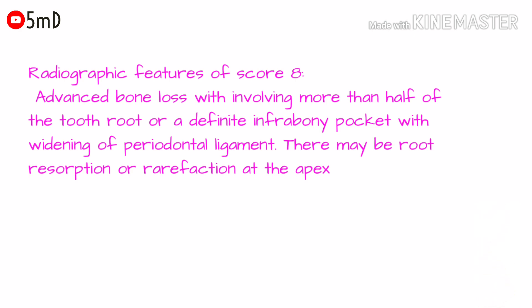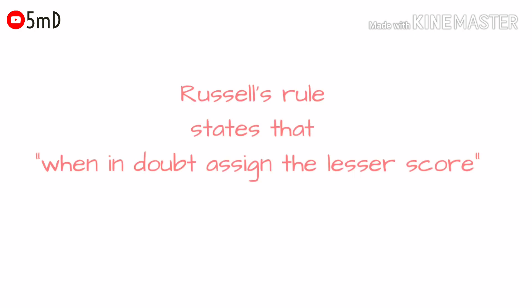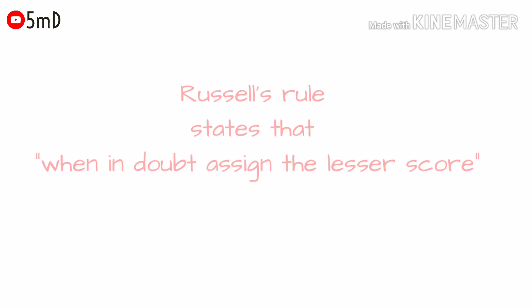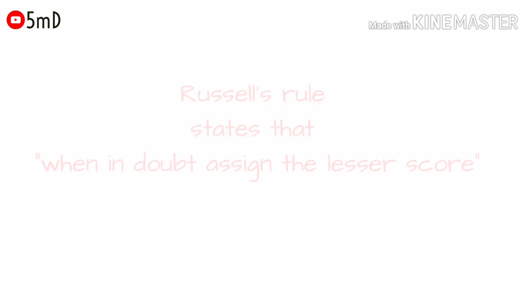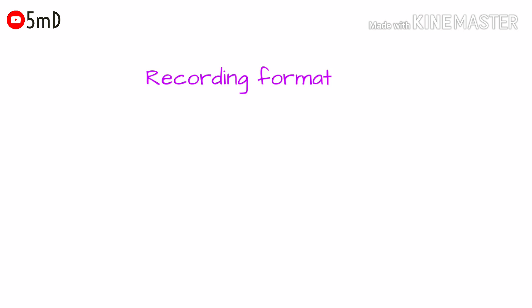There is a special rule — Russell's Rule. Russell's Rule states that when in doubt, assign the lesser score. For example, if you have a doubt whether to categorize a tooth with score six or eight, assign the lesser score, that is score six.